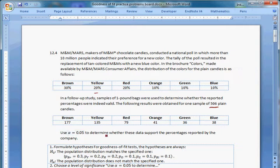Use alpha equals 0.05 to determine whether these data support the percentages reported by the company. Now this is a classic multinomial population goodness-of-fit problem. What this question is really asking is, does it look like this data that we collected here, our counts here, these frequency counts, do these look like they could have been drawn from this population?